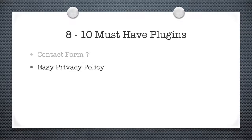Next is Easy Privacy Policy. Whenever you have an opt-in form on your website, you need a privacy policy and terms of conditions — that way Google knows you're not a spammer collecting email addresses for evil purposes. Even if you're not, you want to have this installed to keep Google happy and protect yourself. The Easy Privacy Policy plugin just generates it for you — fill in the little details, takes seconds. It's a no-brainer and saves you a lot of money.